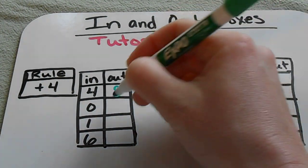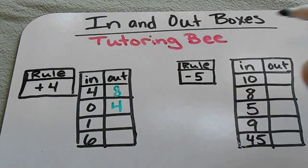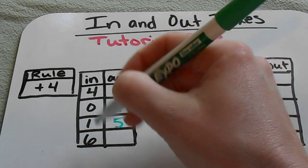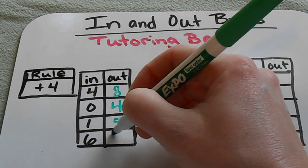then our number is 8. If we put a 0 in, then we come out with a 4. If we put a 1 in, we come out with a 5. And if we put a 6 in, we come out with a 10.